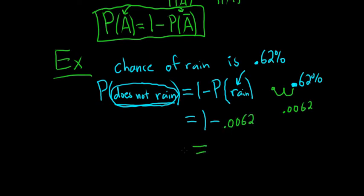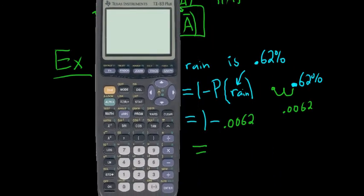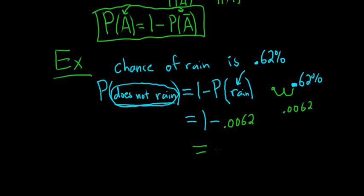Then you can put that in your calculator and I'll do that here. So putting this in the calculator, let me turn it on. It's 1 minus 0.0062. So 0.9938. Good stuff. 0.9938. And that's the probability.